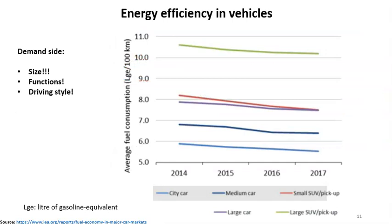What really matters when it comes to efficiency in vehicles is the size — size matters. The graph shows the change in fuel consumption for different car segments: there is a factor of almost two between small city vehicles and large SUVs. Size is the single most important factor. You can combine size with occupancy rates, so having relatively many people in a relatively small car gives you very good service efficiency of the fuel use.